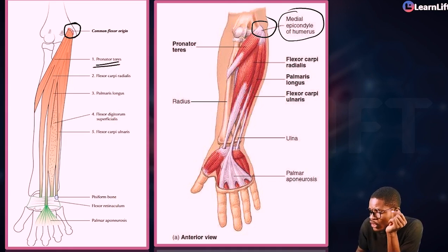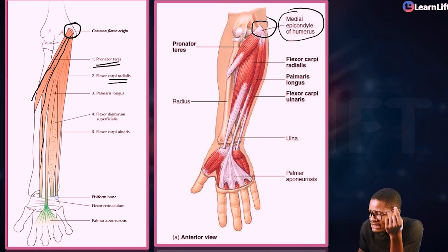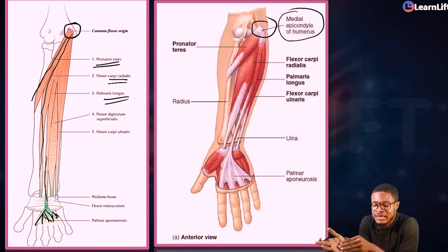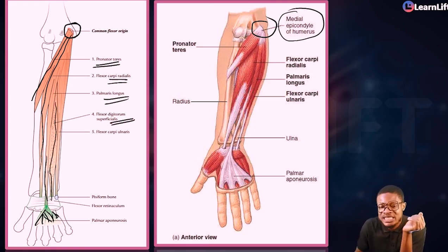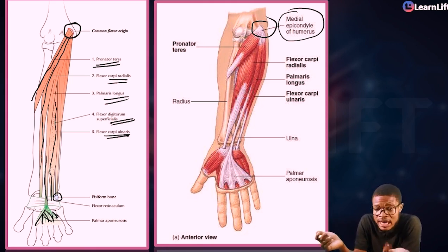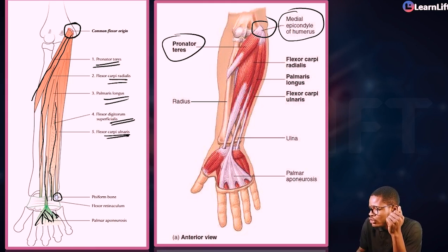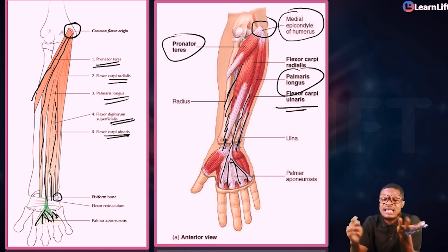The first muscle is your Pronator Teres, running from medial to lateral. The second is your Flexor Carpi Radialis. The next is the Palmaris Longus — it is a long muscle. As it runs down, the tendon continues into the palm. Palmaris Longus is going to the palm of the hand. The fourth is the Flexor Digitorum Superficialis, and the fifth is the Flexor Carpi Ulnaris, which runs down to the pisiform bone.